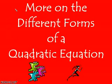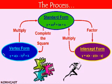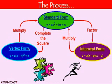In this corncast, we're going to finalize our different forms of a quadratic equation. Here's the process: at any given point, you could be given one of the three forms of a quadratic equation — the standard form, the intercept form, or the vertex form. And depending on the situation, you may have to go from one form to another.